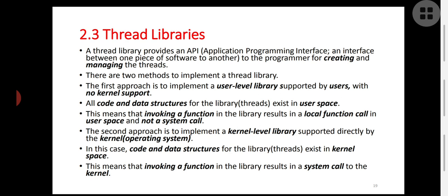There are two implementation methods for a thread library. In the first method, we implement the library at the user level — a user level library supported only by the users with no kernel support. In this approach, all code sections and data structures of the threads or library are present in user level.